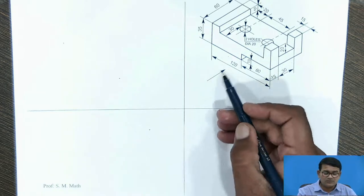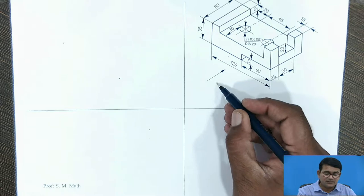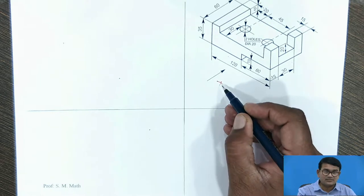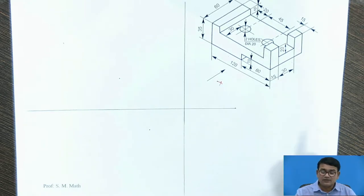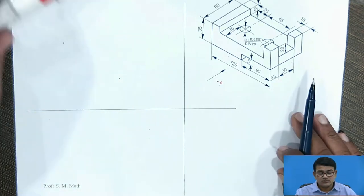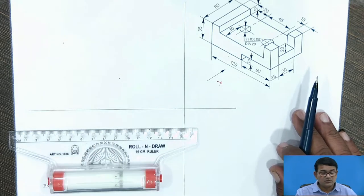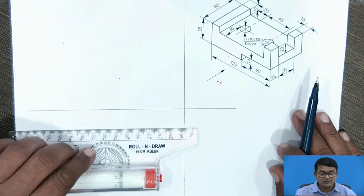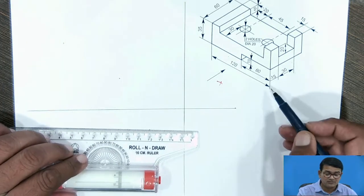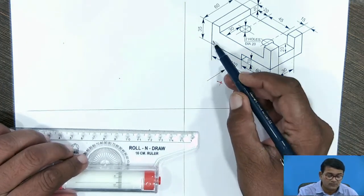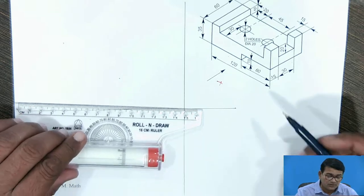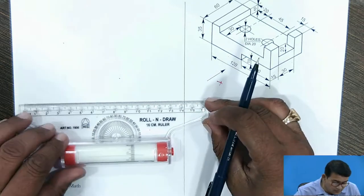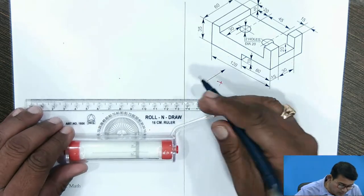We have to see the object from the direction of arrow X in this direction. Previously I showed that first you have to calculate the maximum dimensions. The maximum dimensions are 120 mm and the height is 35 mm. So draw the faint line of 120 mm.